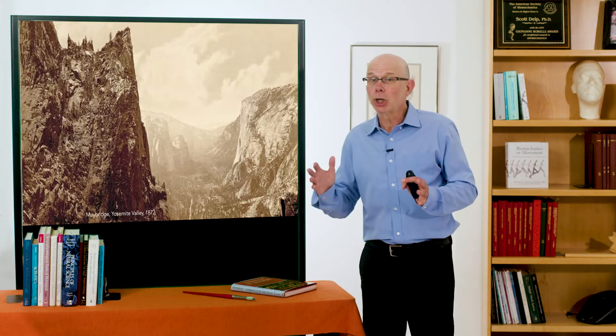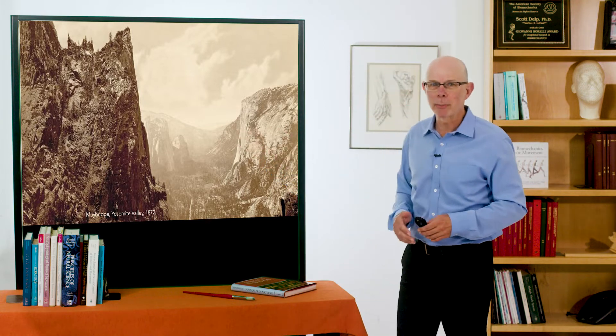Muybridge is one of the strangest and most interesting individuals in the history of photography, cinema, and biomechanics. He came to San Francisco from England when he was in his 20s and wanted to make a name for himself. He first opened a bookshop in San Francisco, but then switched to photography and took some beautiful photographs of the Yosemite Valley about 150 years ago.